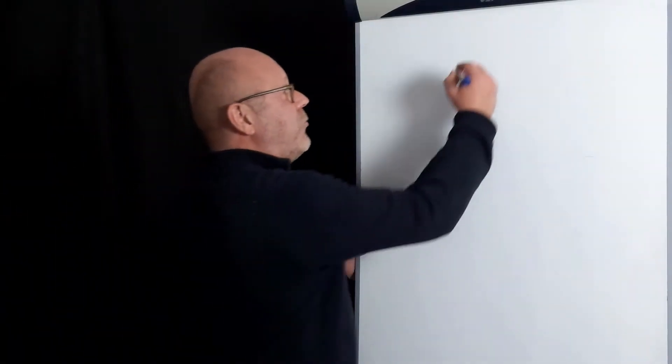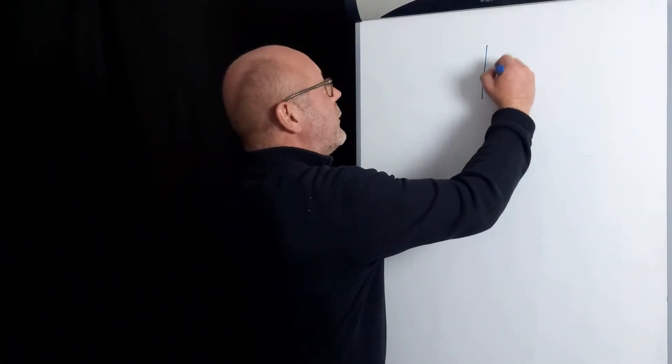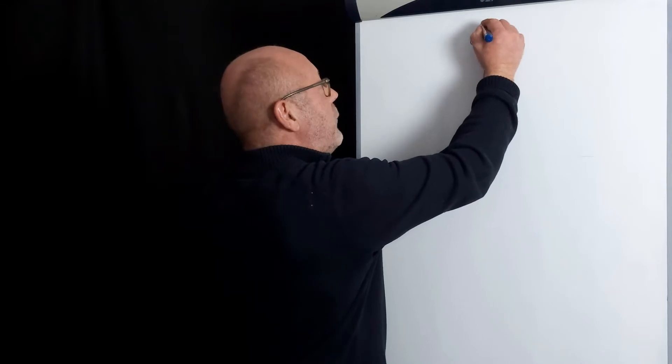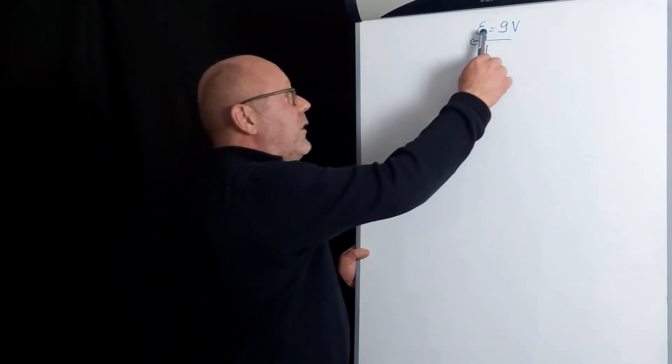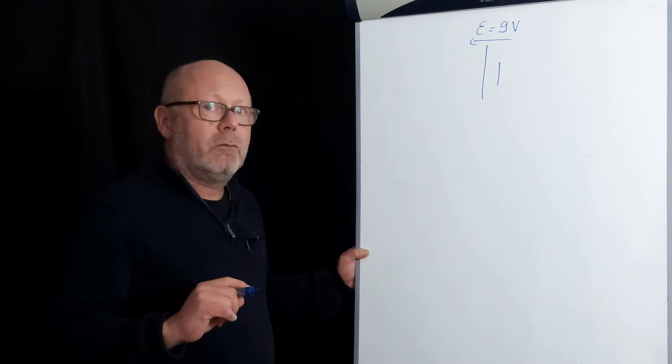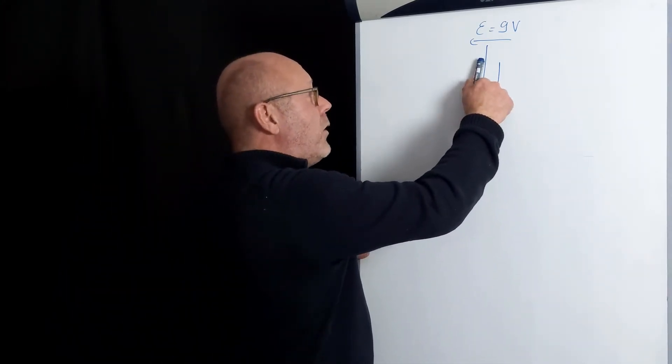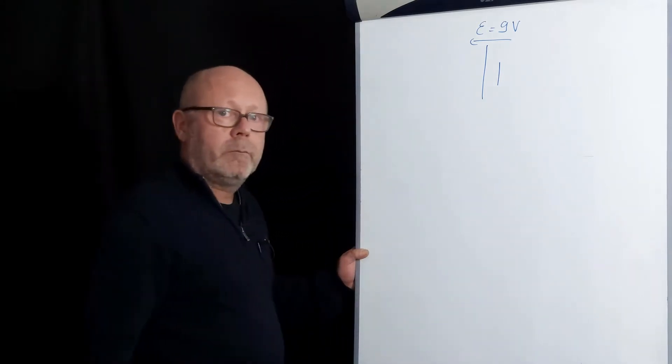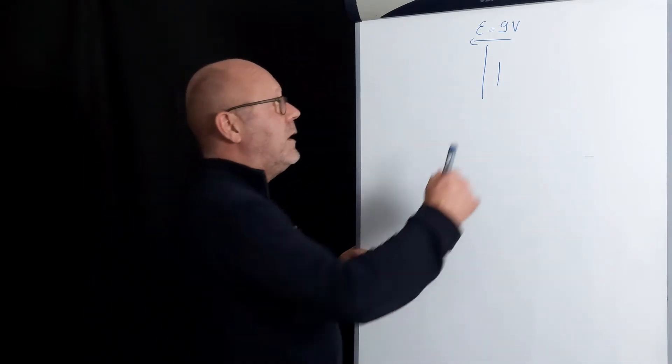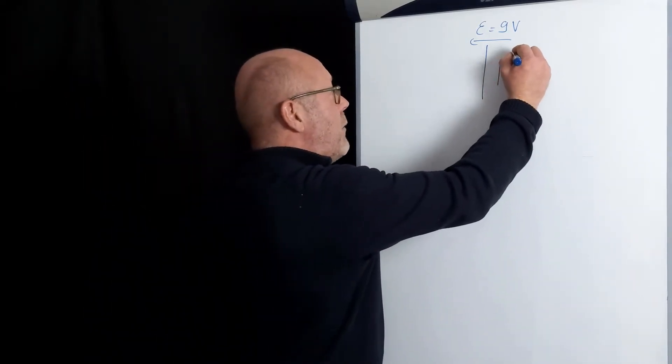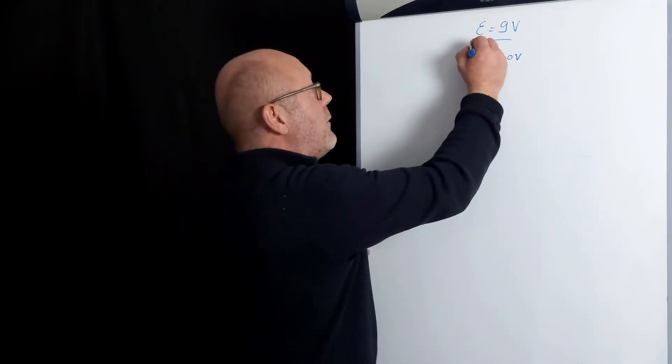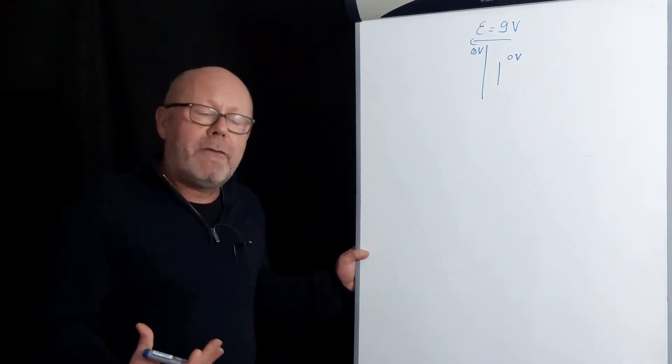Let's draw a battery with an EMF of 9V. This EMF is a difference of potential, meaning that you have an electric potential here 9V larger than an electric potential there. If we fix the electric potential there at 0V as a reference, we will therefore have 9V on this plate.